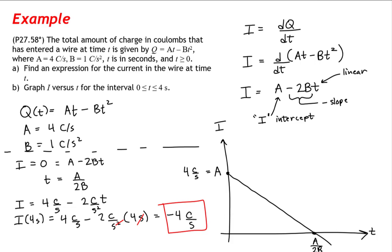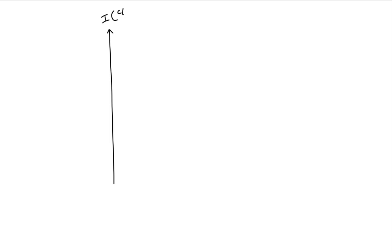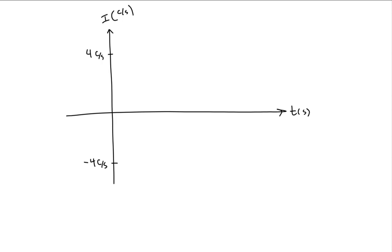This adjusts our graph: we start at 4 coulombs per second of current and end at negative 4 coulombs per second. Let's re-graph using this information. The vertical axis corresponds to current, the horizontal axis to time. We start at 4 coulombs per second, end at minus 4 coulombs per second, and current is a linearly decreasing function: I equals 4 coulombs per second minus 2 coulombs per second squared times t. The time intercept occurs at 2 seconds.